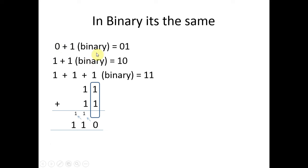Let's look at my slightly more complex one. Remember our rules again. 0 plus 1 in binary is 01. 1 plus 1 in binary is 10. And 1 plus 1 plus 1, you'll see that here, is 3, which written in binary is 11.